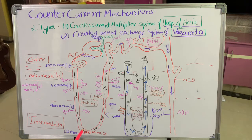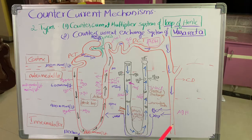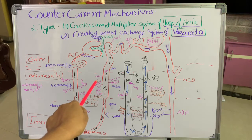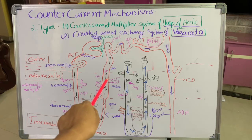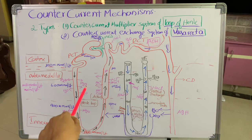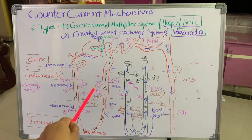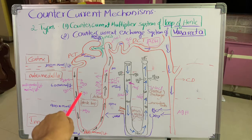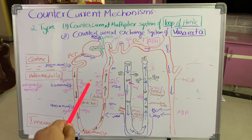The filtrate reaches the hairpin turn of the loop and enters the ascending limb. The ascending limb contains a thin segment and a thick segment. Into the thin segment, urea is secreted from the collecting duct, and this urea along with the filtrate enters the thick segment. The walls of the thick segment are impermeable to water but permeable to solutes — sodium ions move out from the filtrate into the interstitial fluid by active transport, and chloride ions follow passively to compensate the charge. As solute molecules enter the interstitial fluid, osmolarity, concentration, and osmotic pressure all increase.